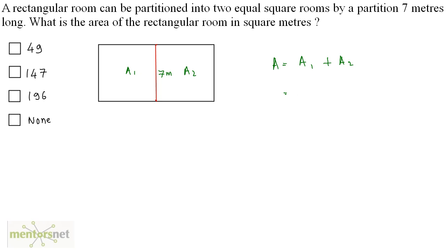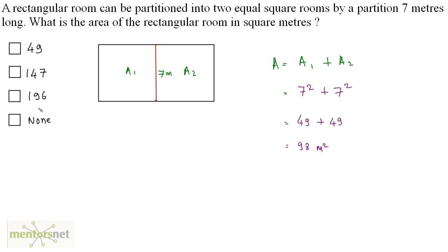The area of the first square is side squared, and the side is 7, so 7² = 49. The area of the second square is also 7² = 49. Total area = 49 + 49 = 98 square meters. We don't have 98 in the options, so option D, none of these, is the correct answer.